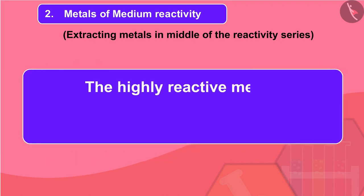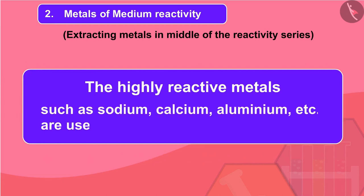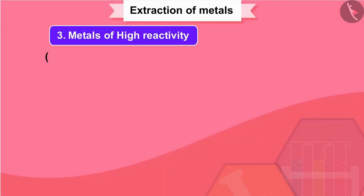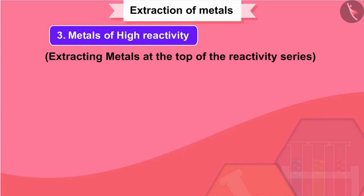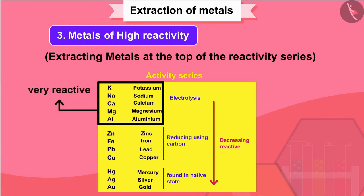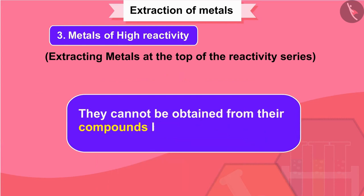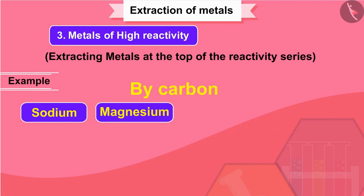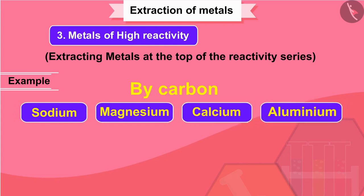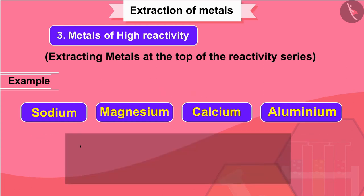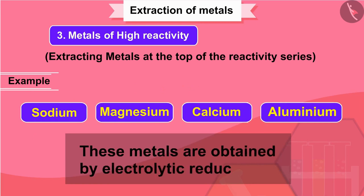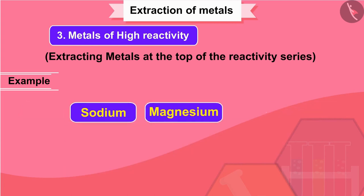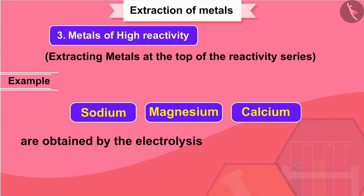The highly reactive metals such as sodium, calcium and aluminium are used as reducing agents. Extracting metals at the top of the reactivity series: highly reactive metals high up in the reactivity series are very reactive. They cannot be obtained from their compounds by heating with carbon. For example, carbon cannot reduce the oxides of sodium, magnesium, calcium and aluminium to the respective metals. This is because these metals have more affinity for oxygen than carbon. These metals are obtained by electrolytic reduction. For example, sodium, magnesium and calcium are obtained by the electrolysis of their molten chlorides.